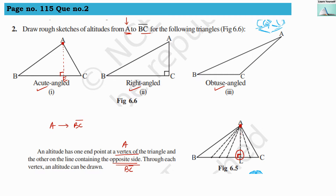So AE is our altitude for the acute angle triangle. For the right angle triangle, the line from vertex A touches line segment BC at a right angle, and the side AC of the triangle is itself an altitude. For the obtuse angle triangle, we extend line segment BC and draw a straight line from vertex A making a right angle at BC, so AE is the altitude for the obtuse angle triangle.